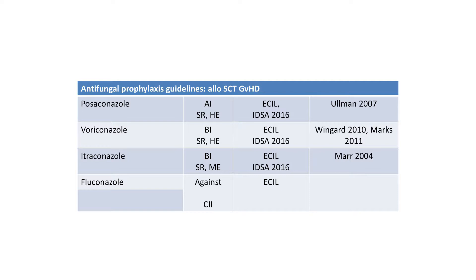But in the context of allogeneic SCT with GVHD, it is different — well supported by the Ullman paper by Andrew Ullman in New England in 2007, with strong backing supported by both bodies. Voriconazole is B1, though a little lagged down by the Wingard paper which just barely showed significance in the efficacy of voriconazole, but still given a strong evidence, high level of evidence rating. Most people say to think against using fluconazole in this context.